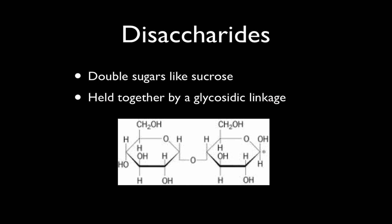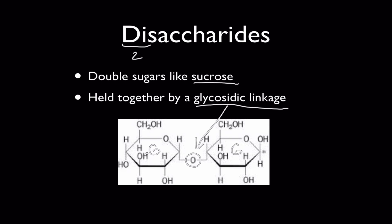Disaccharides are, just as the name implies, double sugars — di means two. Double sugars like sucrose: sucrose is glucose plus fructose, held together by a linkage called a glycosidic linkage. Looking at this diagram, we have a glucose and a glucose working together — so this is a different disaccharide. This is maltose, one of the sugars found in malted grains, the basis for malt alcohol.